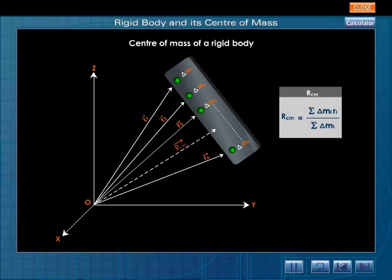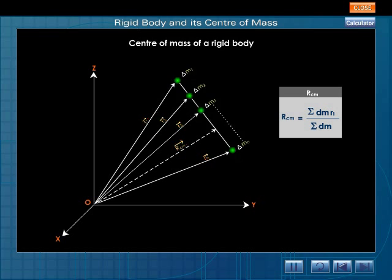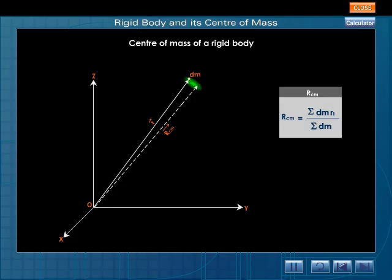If the masses of the elements considered are infinitesimally small replace delta M I by D M. If the number of such masses is infinite then the equation for position vector of center of mass becomes RCM is equal to integral R D M by D M.